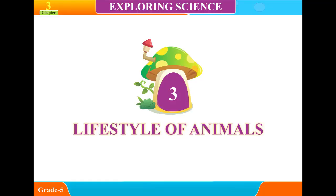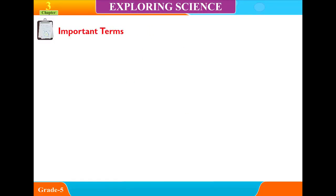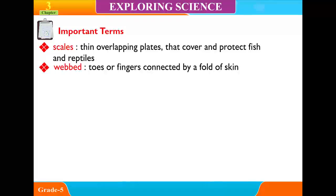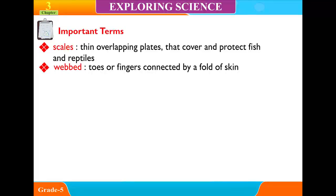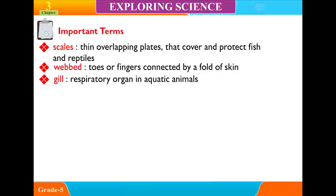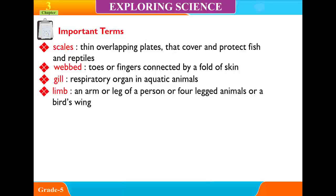Chapter 3: Lifestyle of Animals. Important Terms: Thin overlapping plates that cover and protect fish and reptiles. Toes or fingers connected by a fold of skin. Respiratory organ in aquatic animals. An arm or leg of a person or four-legged animal, or a bird's wing.